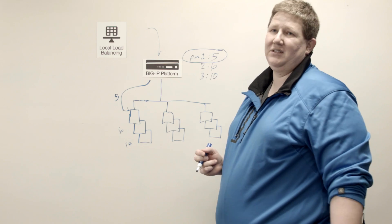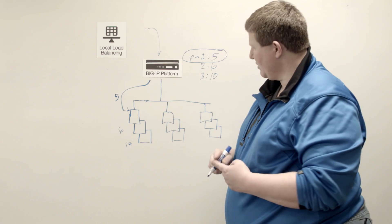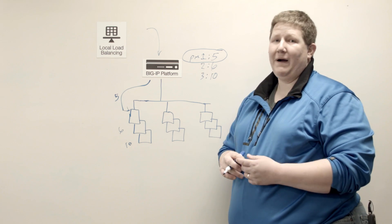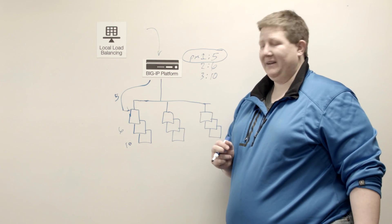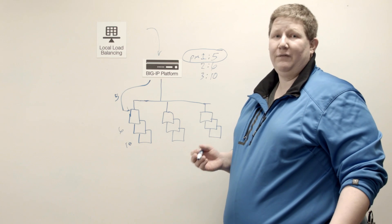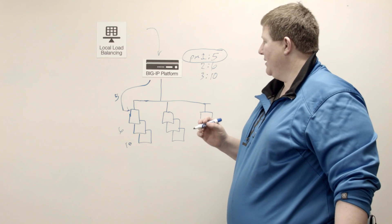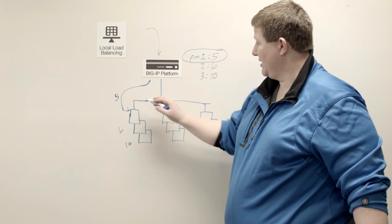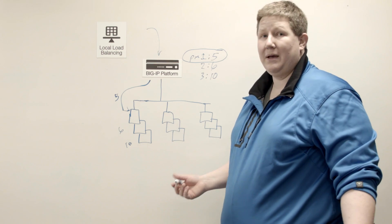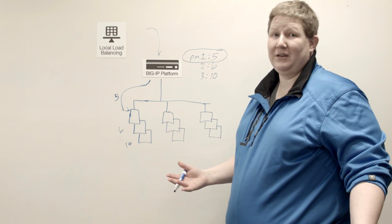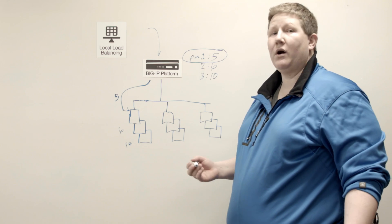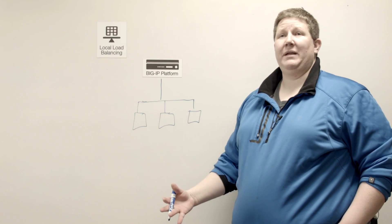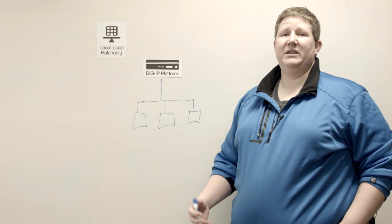Assume all the other pool members have counts much higher than five, six, and ten — pool member one is going to get that next connection because it only has five outstanding connections. So the lowest counter when a new request comes in wins in the fastest algorithm. A couple of things to note: first, if you're going to use the fastest algorithm you have to use an L7 profile like HTTP. Also, if you have OneConnect enabled on your virtual server, idle connections do not count against this counter.